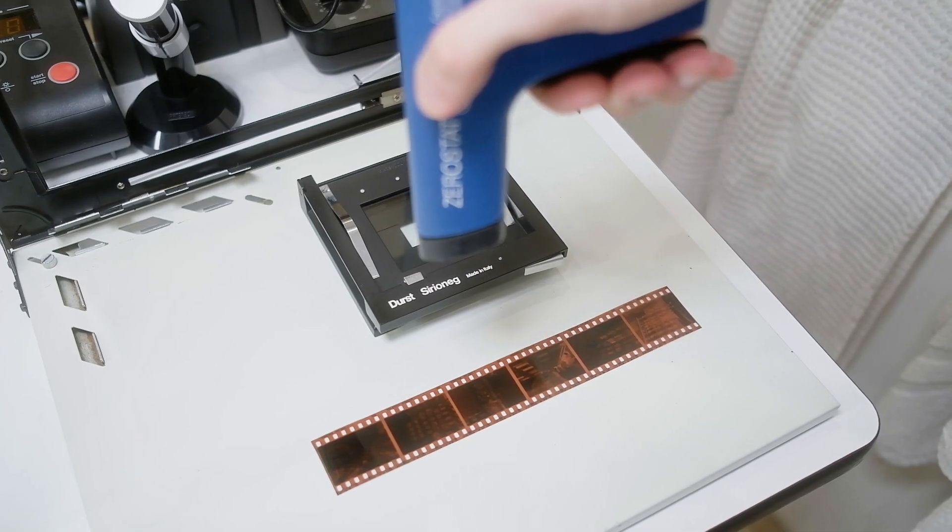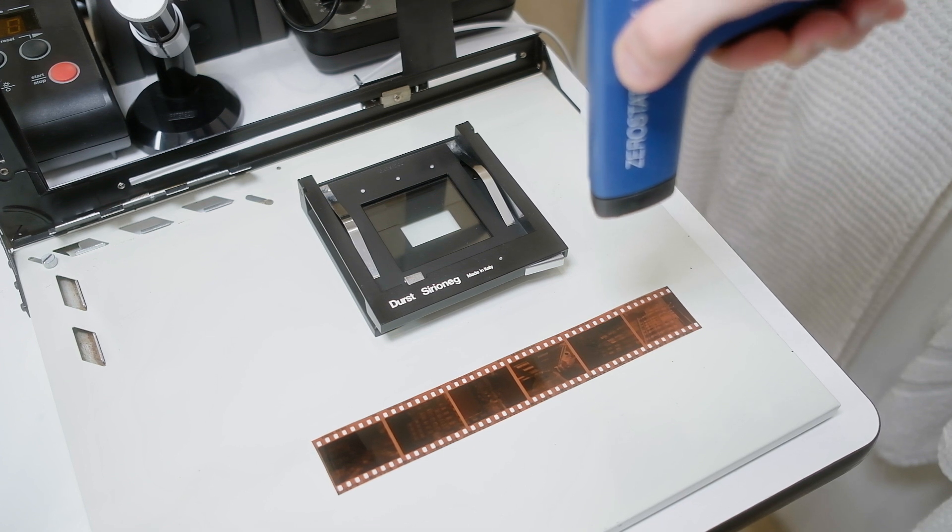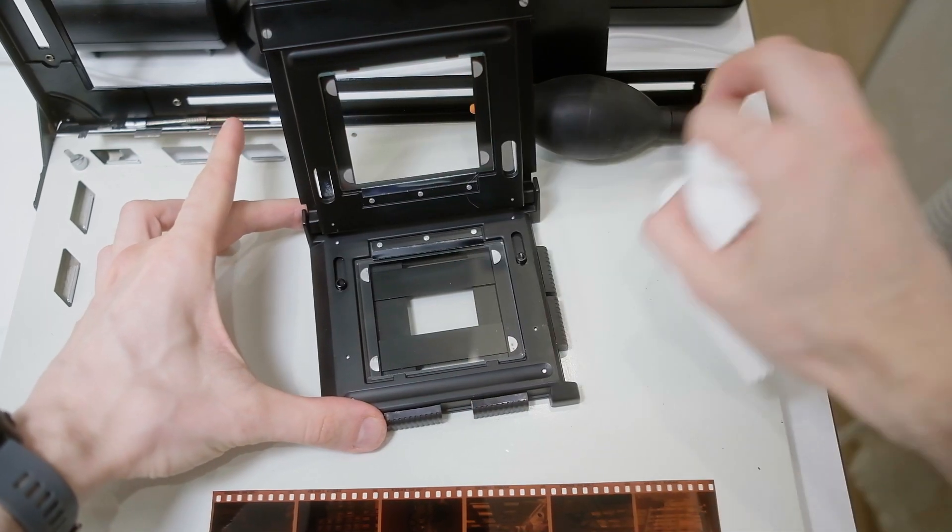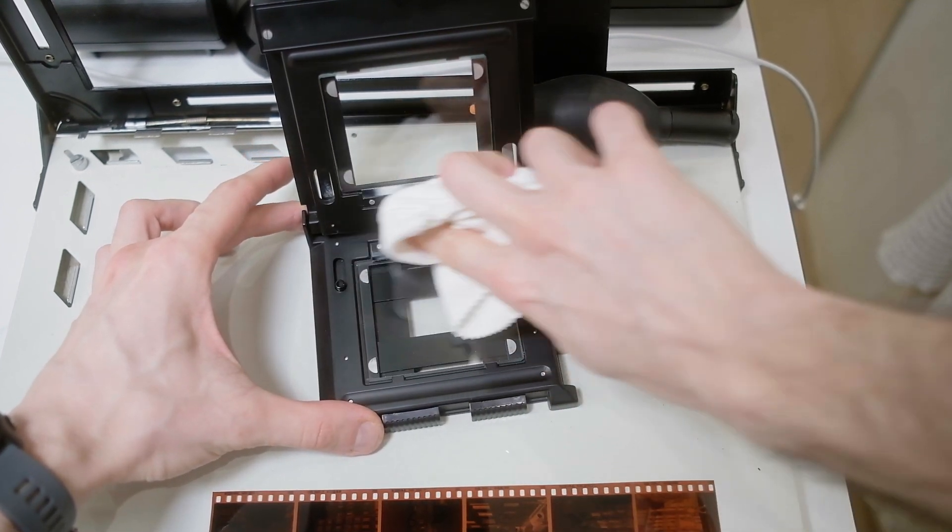Let's load up the negative. To remove all the static electricity from my negative I'm using this anti-static gun. After I remove all the charge from the surface I can easily clean up the surface of the carrier.